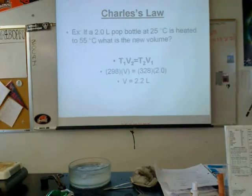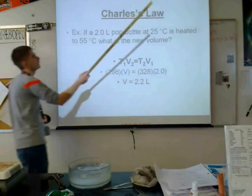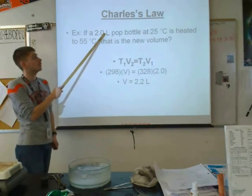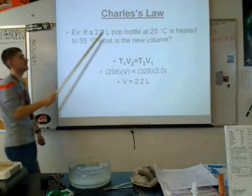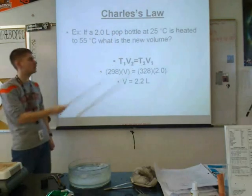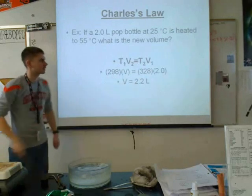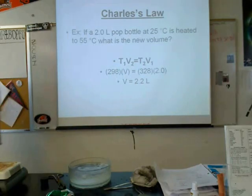Here's an example: a 2-liter pop bottle at 25 degrees Celsius is heated to 55 degrees Celsius — what's the new volume? Plug in T1, V2, T2, V1, solve for V2, and you get 2.2 liters.